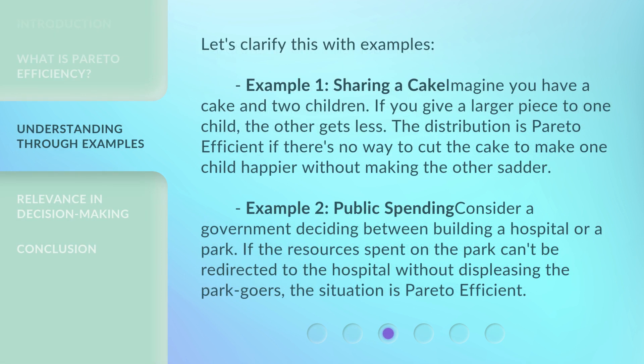Let's clarify this with examples. Example 1: Sharing a cake. Imagine you have a cake and two children. If you give a larger piece to one child, the other gets less. The distribution is Pareto efficient if there's no way to cut the cake to make one child happier without making the other sadder. Example 2: Public spending. Consider a government deciding between building a hospital or a park. If the resources spent on the park can't be redirected to the hospital without displeasing the park goers, the situation is Pareto efficient.